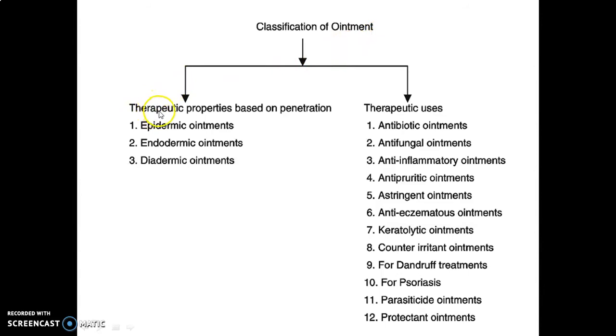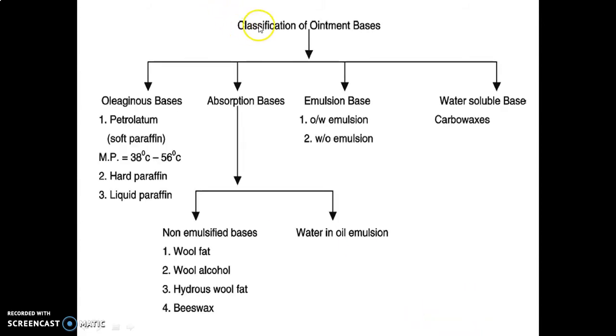We will discuss the classification of ointments in detail. There are two classes: therapeutic properties based on penetration, and based on therapeutic uses. Based on penetration, they are classified into epidermic, endodermic, and diadermic ointments according to the layer of skin. Therapeutic uses include antibiotic ointments, antifungal ointments, anti-inflammatory, anti-pruritic, astringent, anti-eczematous, keratolytic, counter-irritant, for dandruff treatments, for psoriasis, parasiticide, and protectant ointments.